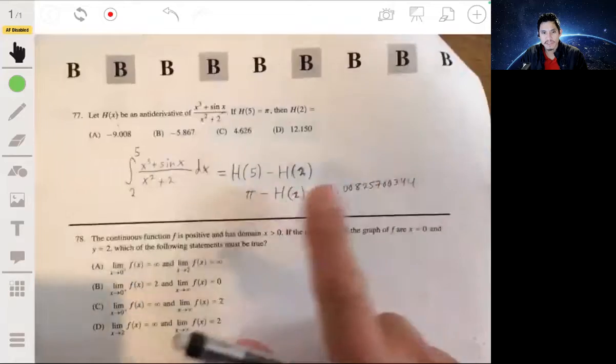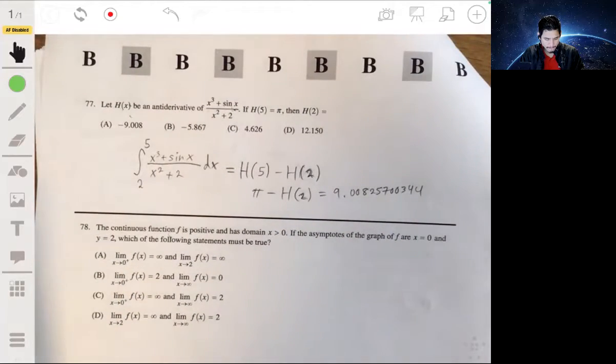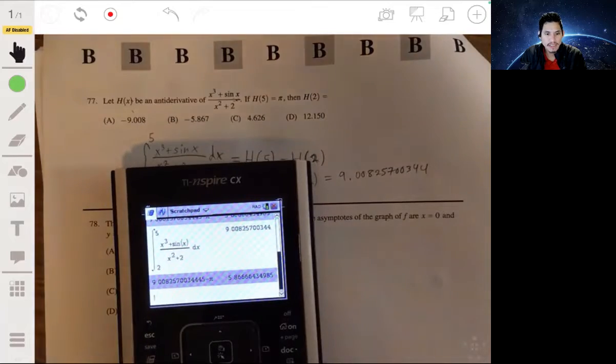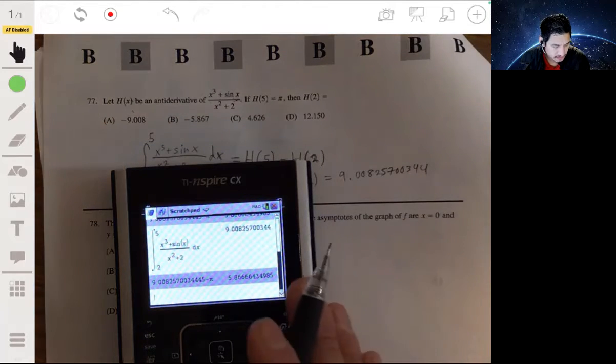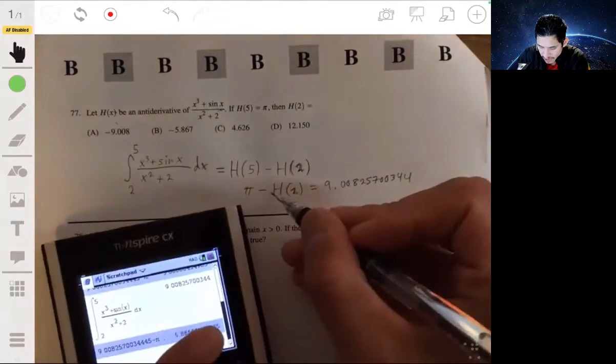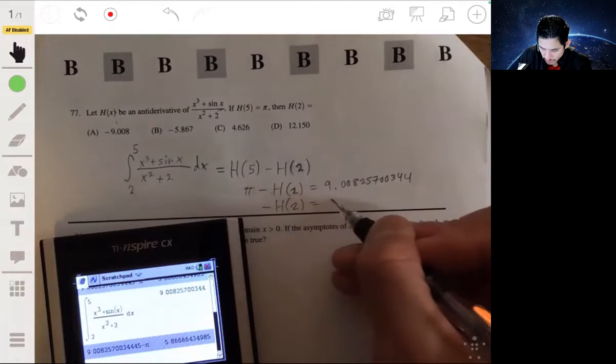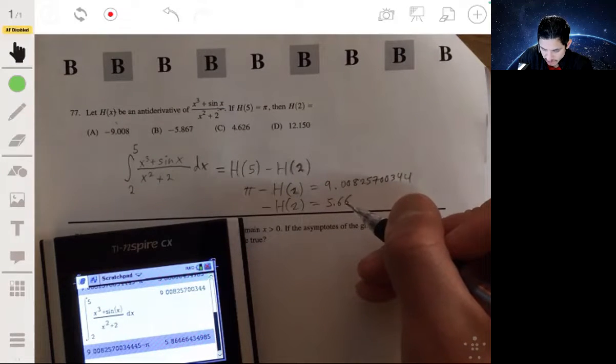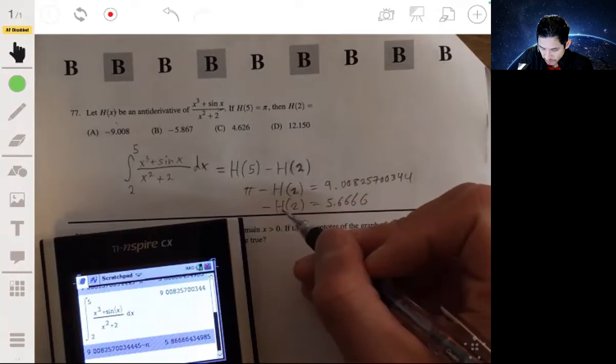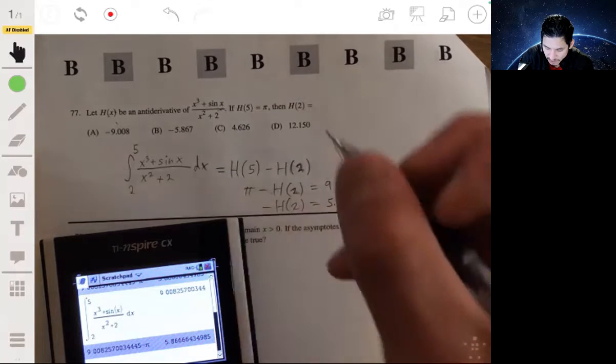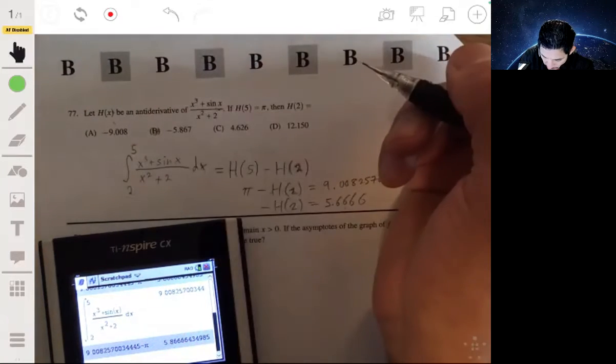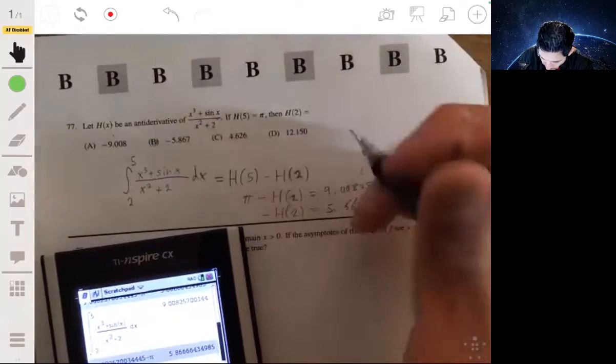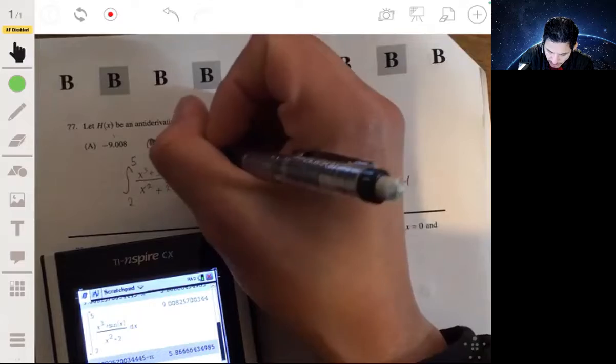Looks good and we have 9.00825. Okay, so from this we just subtract pi, and we'll get positive 5.8666. This will be negative H of 2 will be positive 5.666, so then the answer will be negative this number, it will be negative 5.86. So the answer will be B.